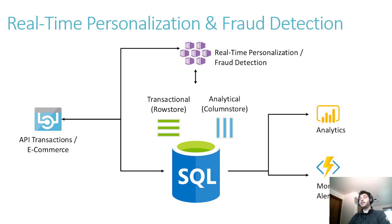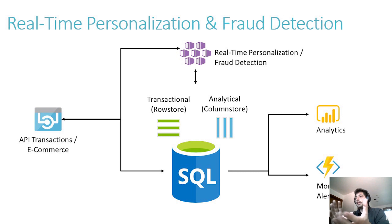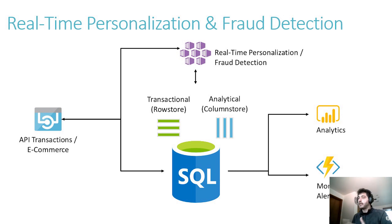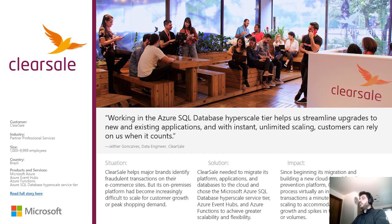Personalization and fraud detection is a common requirement today — to ensure users have a personalized experience, and at the same time, companies can detect fraud as soon as possible. This is another example where the transactional row store and the analytical store work very well together, and as you can see, it's a very simple architecture. You just load your data into Azure SQL using the transactional row store, and automatically it is turned into a column store that can be used by analytics, monitoring, and alerting. We have a couple of customers that we did a case study with, and they are using this architecture to exactly do fraud detection and personalization.